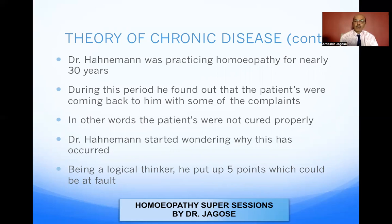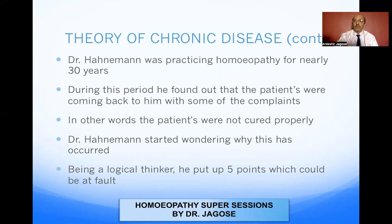Being a logical thinker, he put up five points which could be at fault. As you all know, Dr. Hahnemann's father, when Hahnemann was small, used to lock him in a room and give him a question to solve. In the evening, the room was opened and Hahnemann had written down the answer. So right from childhood, his father had taught him how to think properly and logically. Therefore, Dr. Hahnemann put up five points which could be at fault.